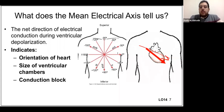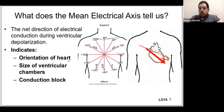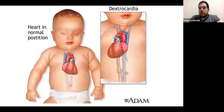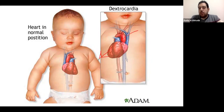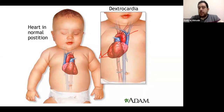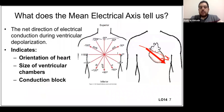To understand how the axis can change, consider dextrocardia — a very rare condition where the heart is flipped, with the apex pointing in the opposite direction. In that person, the flow of electricity goes in the opposite direction. We call this an extreme axis deviation, and we can represent this numerically on the lead circles.